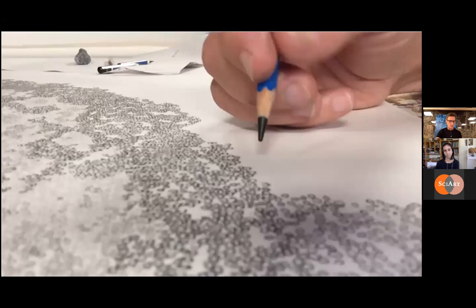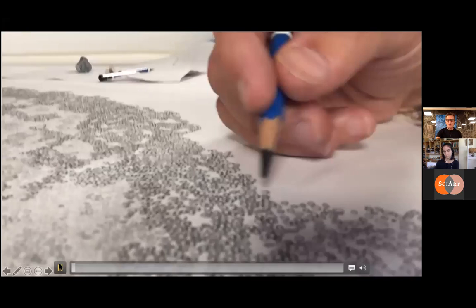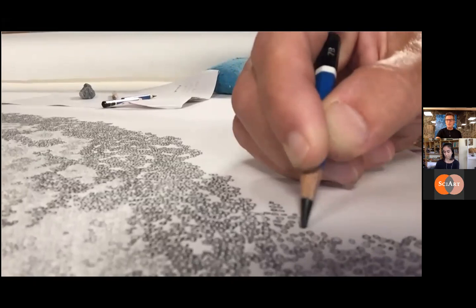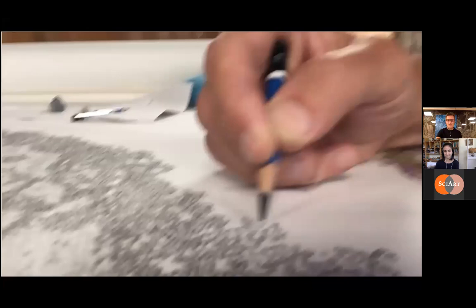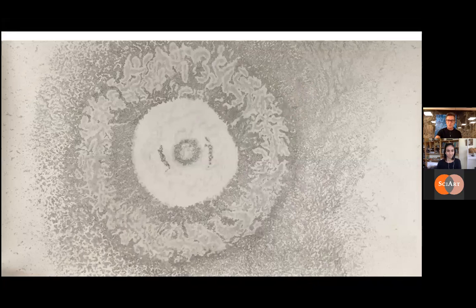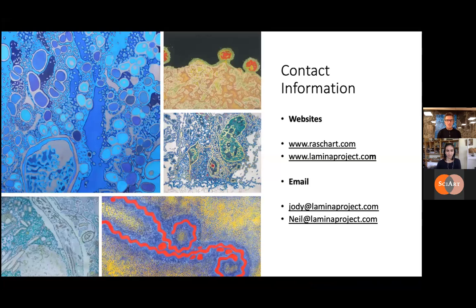The final piece I want to show is one I just finished — a hydrogen atom — just to show you the technique. It's all very small circles that create patterns within patterns. You can see how much pencil is used; this is very pencil intensive. The work builds up to this final piece. For more, I have two websites: Brash Art and Laminar Project, which is a group of artists who use science in their work. Feel free to reach out to myself and Neil.